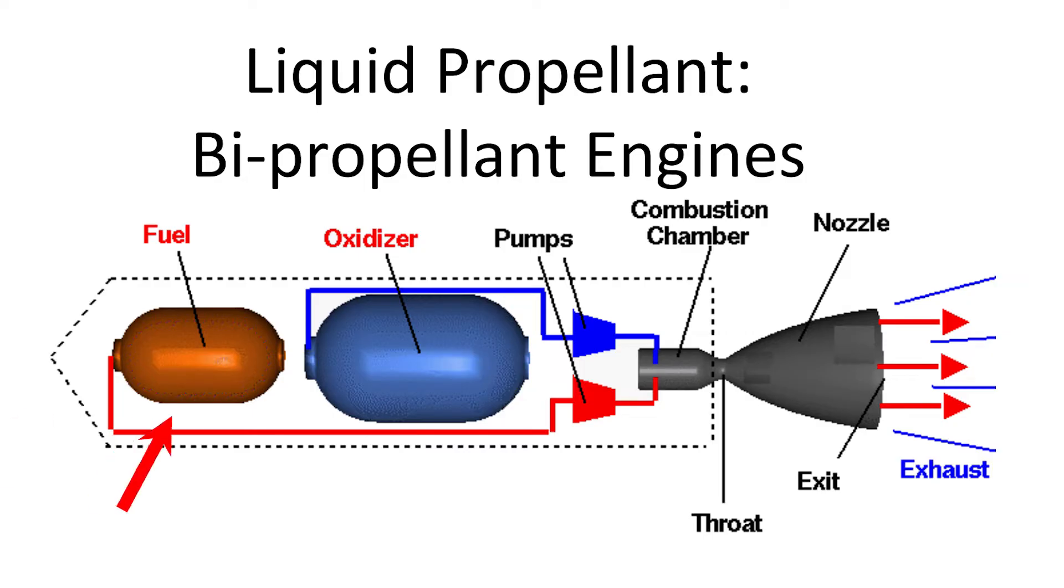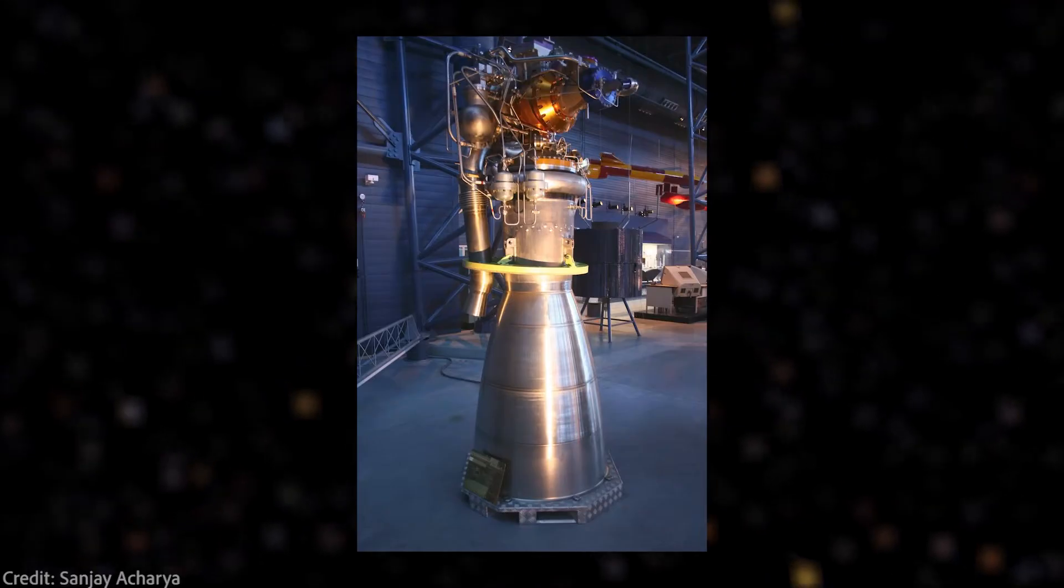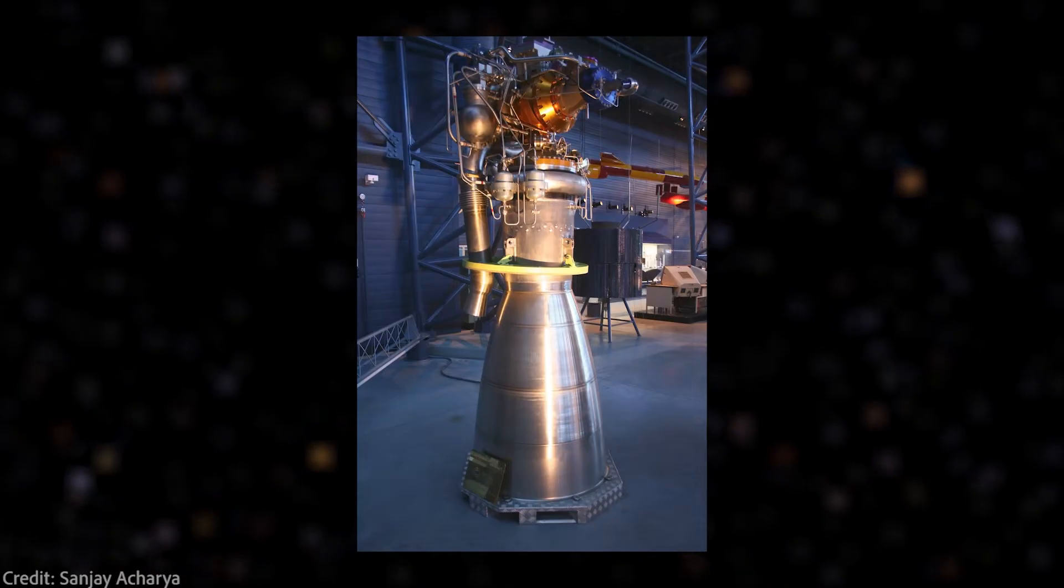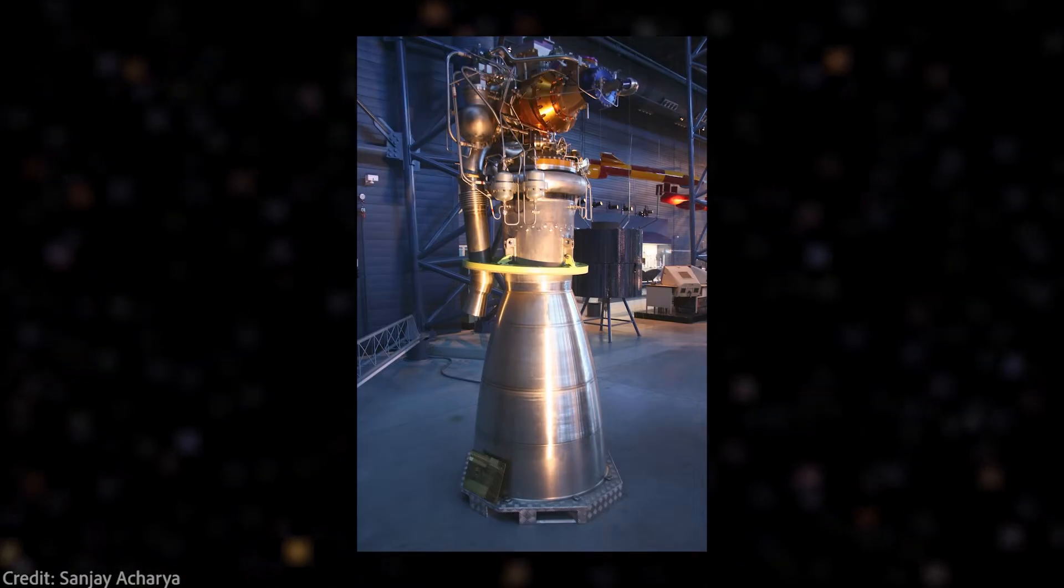Here is fuel, here is oxidizer. They go here into a combustion chamber, where reaction has to start via ignition and then the resulting gas is exhausted through the nozzle in this direction. And the rocket goes in the opposite direction. The advantage is that you could turn such an engine off. It doesn't have to burn everything at once.